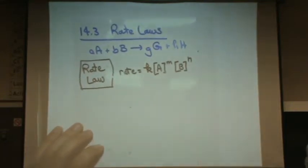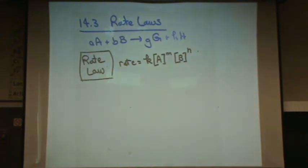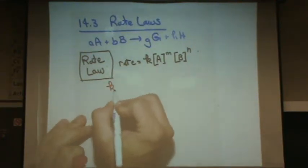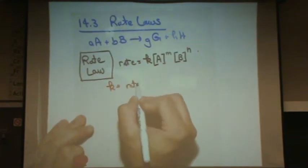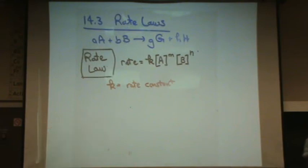I'll do that in a different color. K is the rate constant. So k is different than the rate—it's called the rate constant. It's a constant for the reaction.